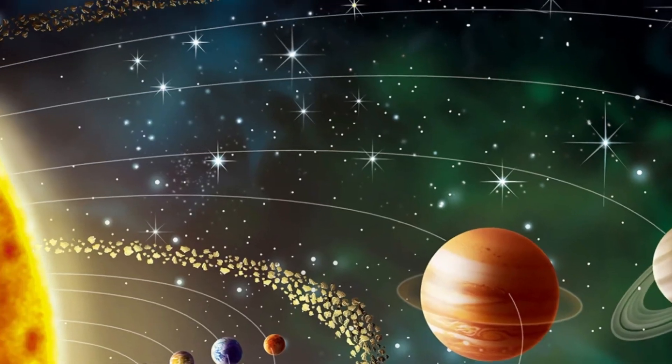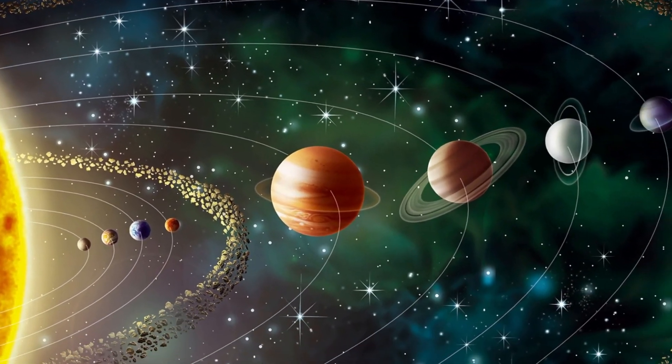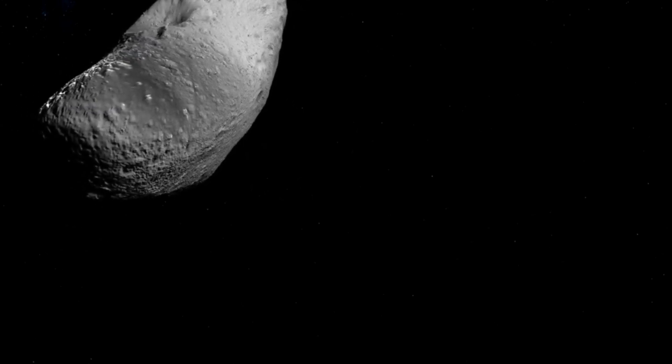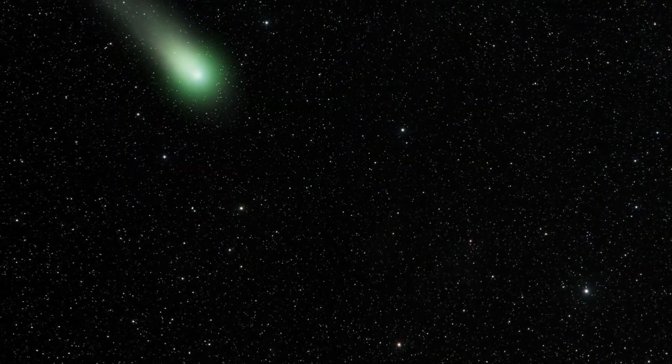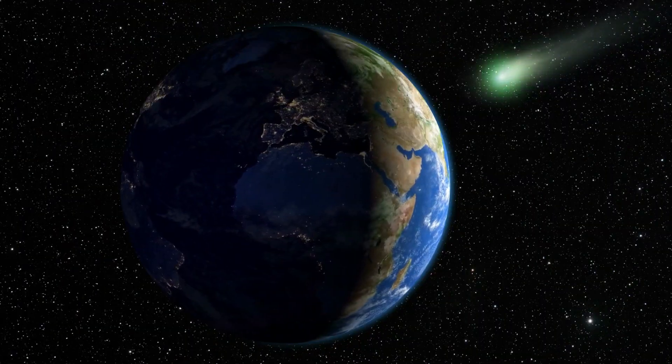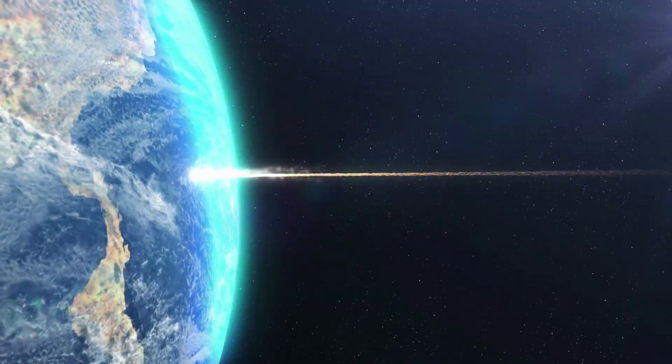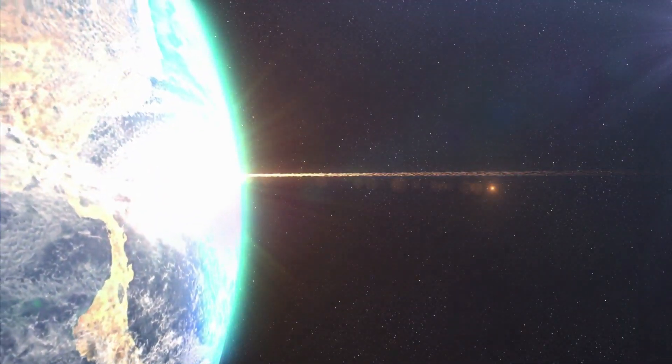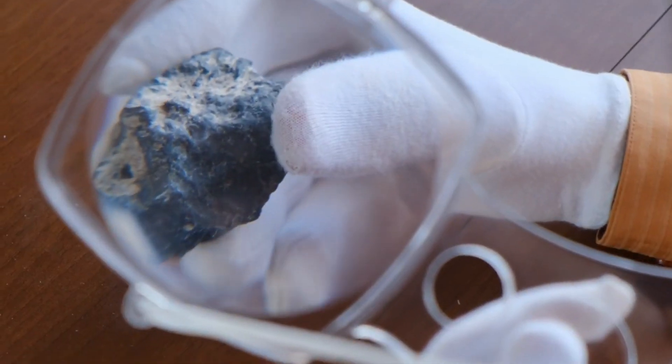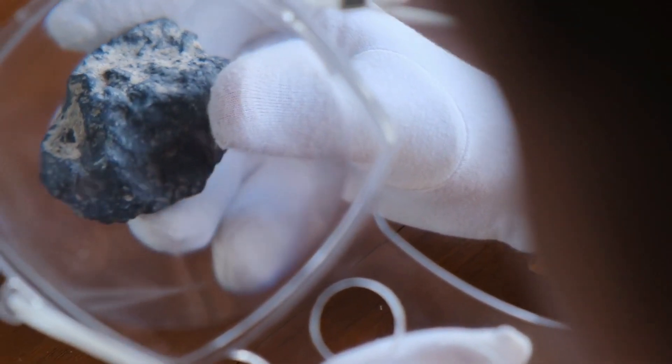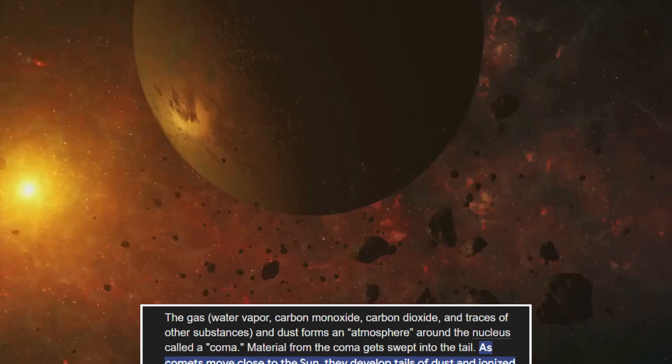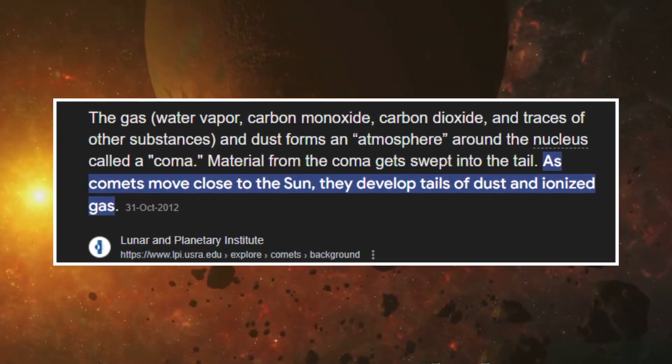How dark comets could have delivered water and life-building materials. One of the most compelling theories about dark comets is that they could have played a role in delivering essential volatiles, such as water and organic compounds, into the early Earth, contributing to the origins of life. This hypothesis ties into a broader scientific idea that comets, asteroids and other space objects may have been key to the formation of life on our planet. Research has shown that comets and asteroids likely delivered the building blocks for life, such as amino acids and nucleobases, throughout the early solar system. These compounds may have seeded the formation of life as we know it on Earth.